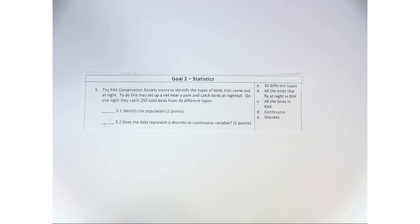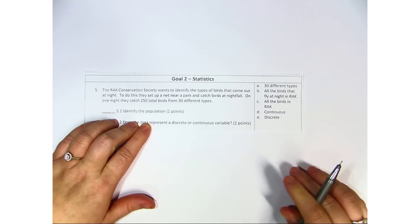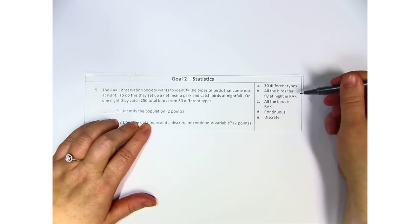Identify the population. Now the population is the entire group that you are looking for. So is it 30 different types of birds? Is it all the birds that fly at night in Rack?